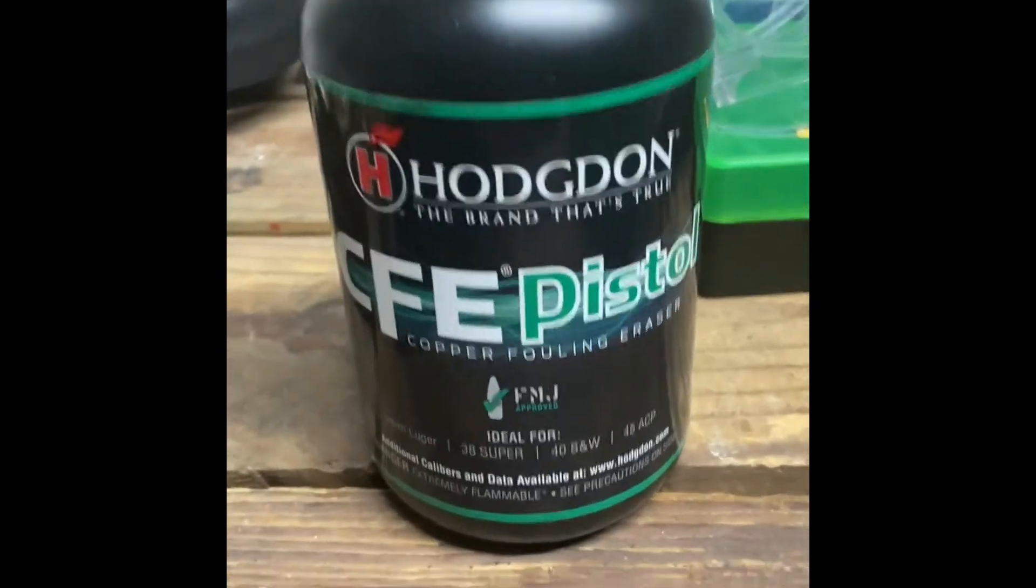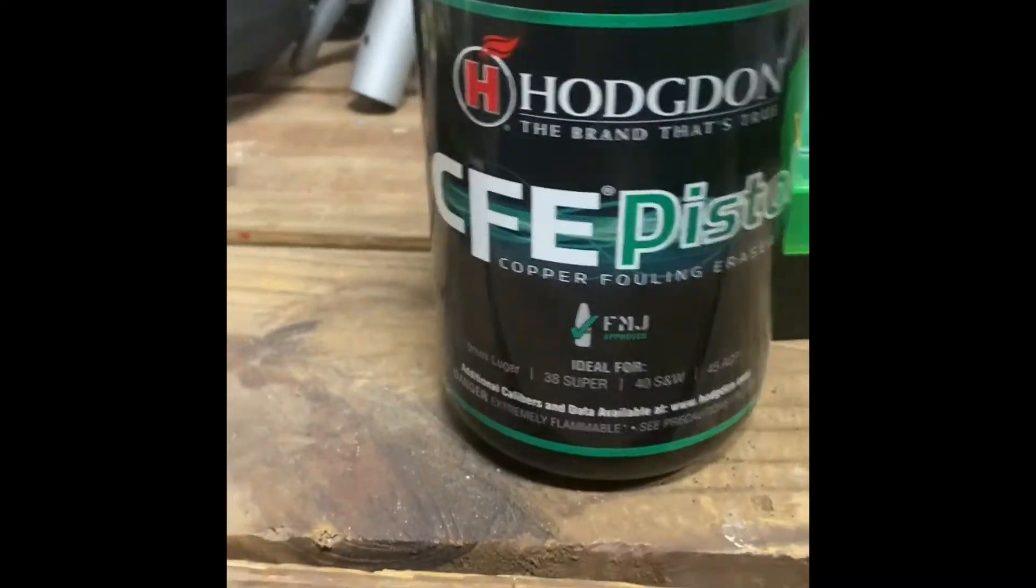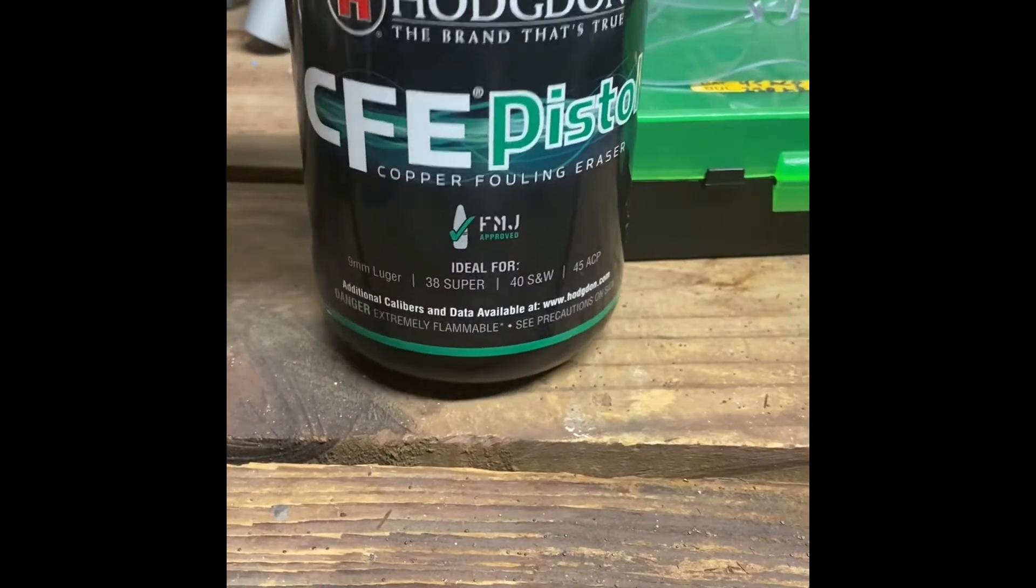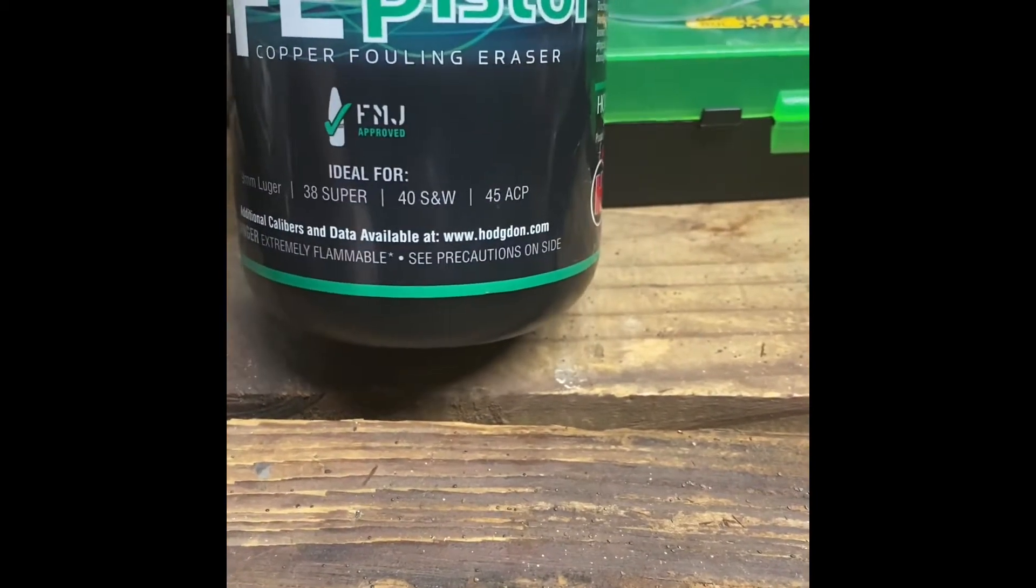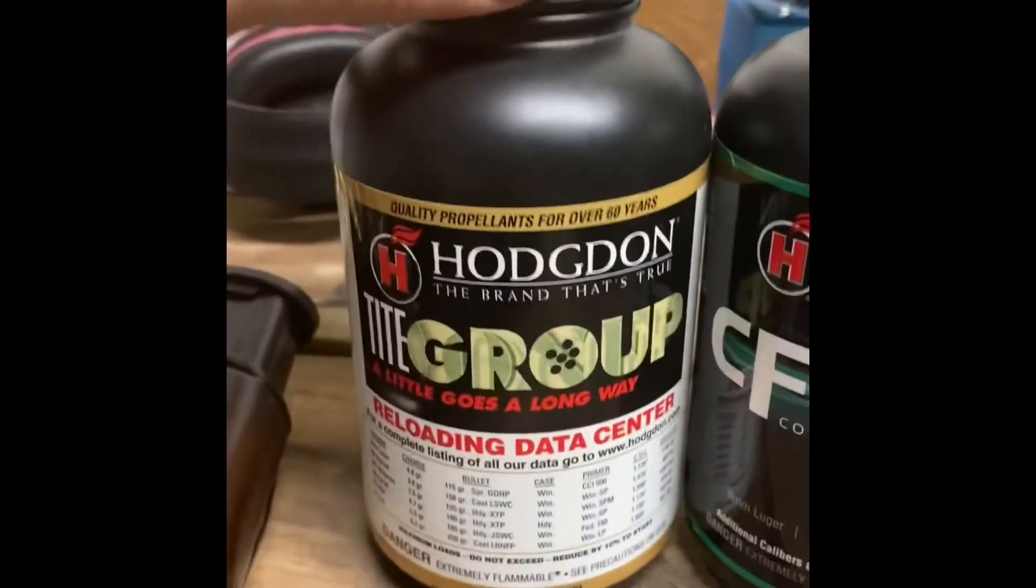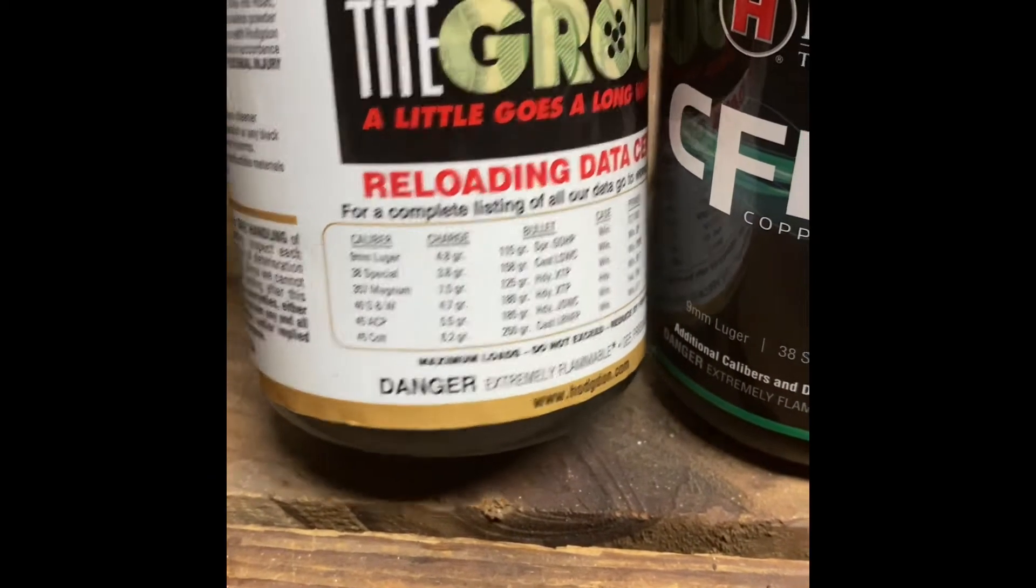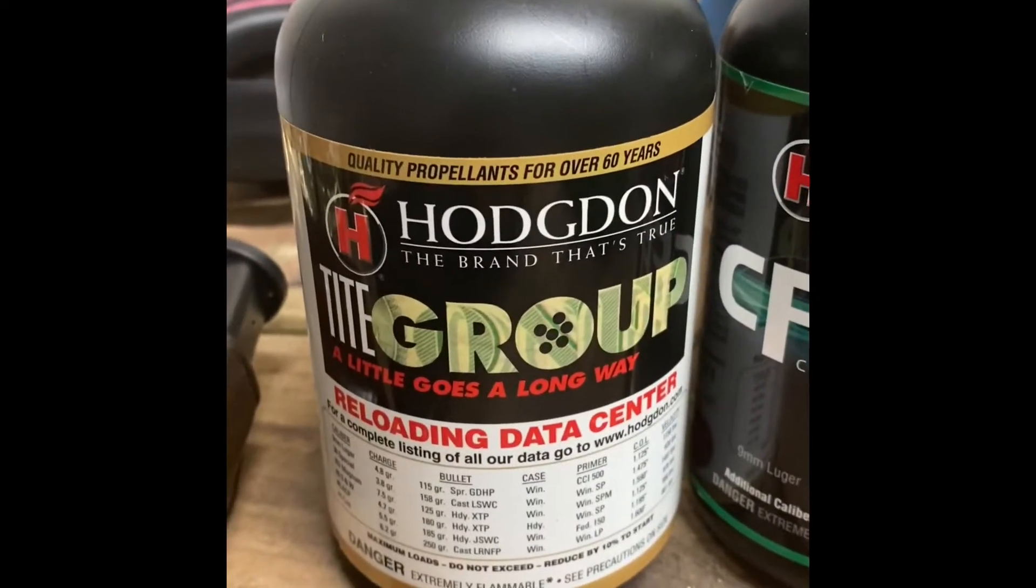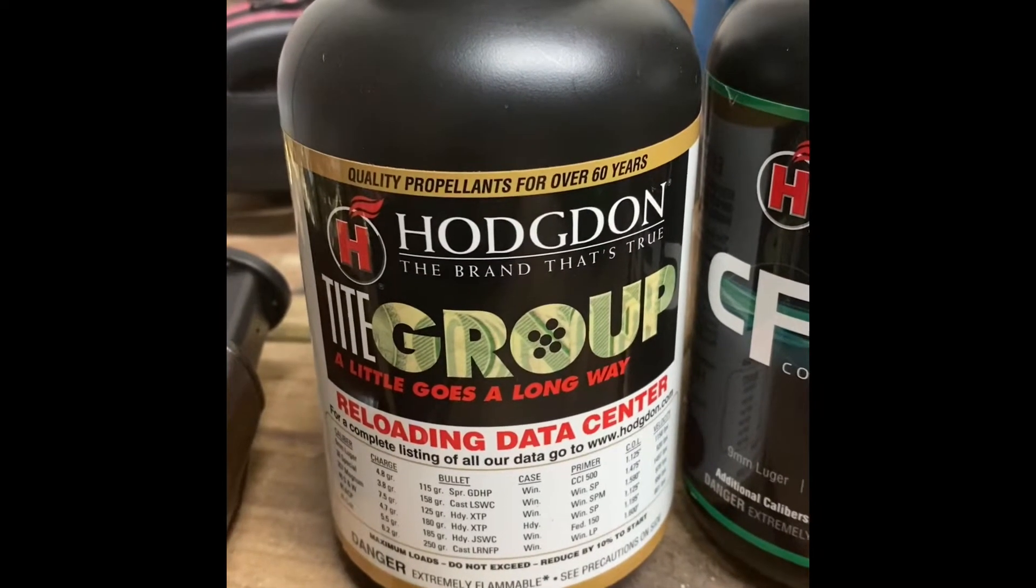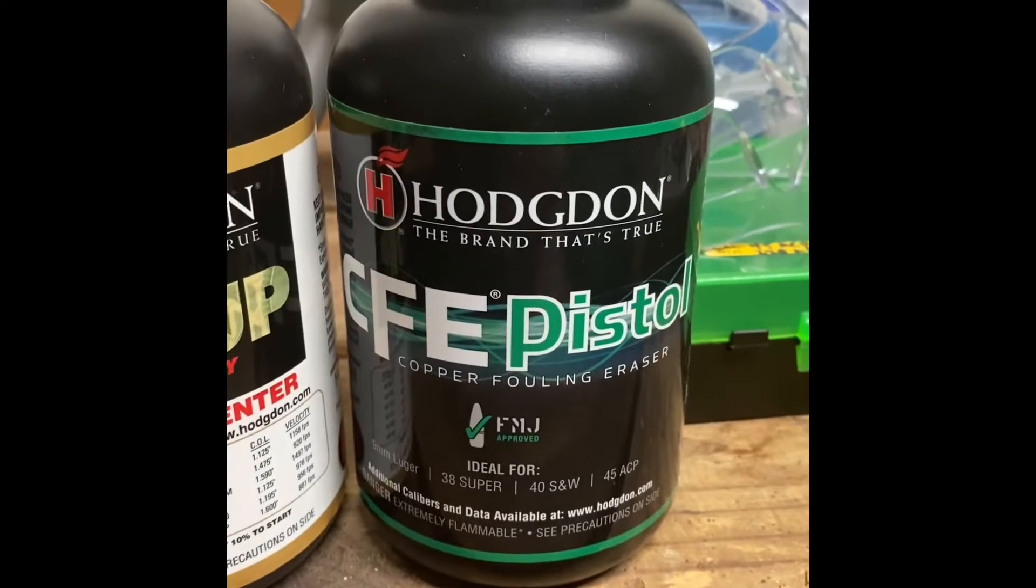This is the powder I'll be using today, it's Hodgdon CFE pistol powder. It's good for everything from 9 millimeter, 38 Super, 40 Smith & Wesson, and 45 ACP. I haven't ever used this one for 45 ACP before. This is what I normally use, which is the Hodgdon Titegroup, and it does everything: 9 millimeter, 38 Special, 357 Magnum, 40 Smith & Wesson, 45 ACP, and 45 Colt. But the problem with this powder, every time you load it and shoot it, it is dirty. It produces a smoke cloud like I'm shooting black powder. It makes the gun dirty, makes the range nasty. So we're going to go with this one today, see how this one works.